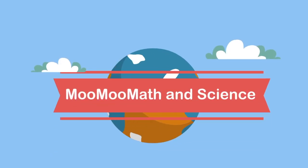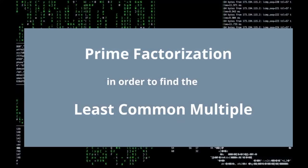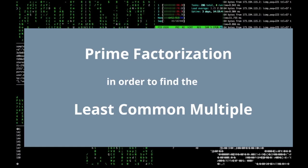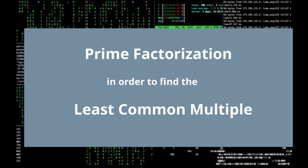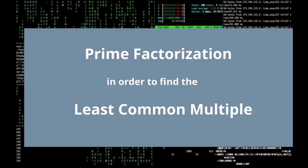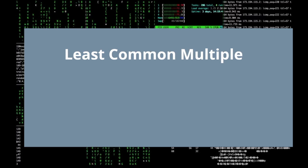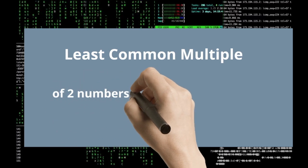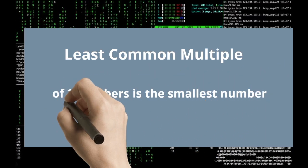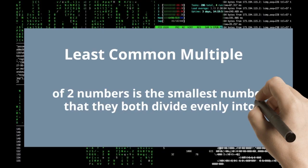Welcome to Moo Moo Math and Science. In this video, let's learn how to use prime factorization in order to find the least common multiple or LCM. The LCM of two numbers is the smallest number that they both divide evenly into. So let's get started.